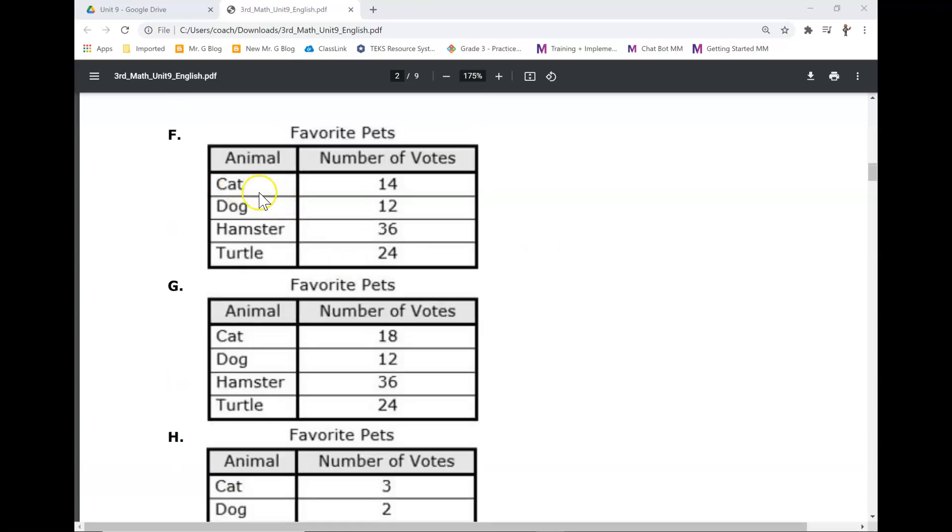The order in the answers is cat, dog, hamster, turtle.